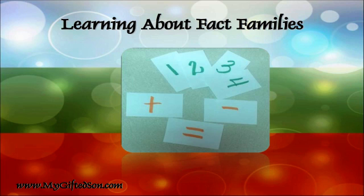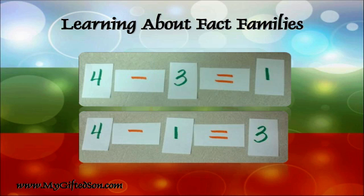Next, I cut index cards in half and wrote the numbers 0 through 9 using a marker. In a different color, I used three of the cut index cards to write the plus, minus, and equal signs. Then I showed Brandon how to use the cards to create number sentences. We swapped the numbers around to create related fact families and wrote them in the charts. You can find a step-by-step guide on using these index cards to teach fact families at www.mygiftesson.com.